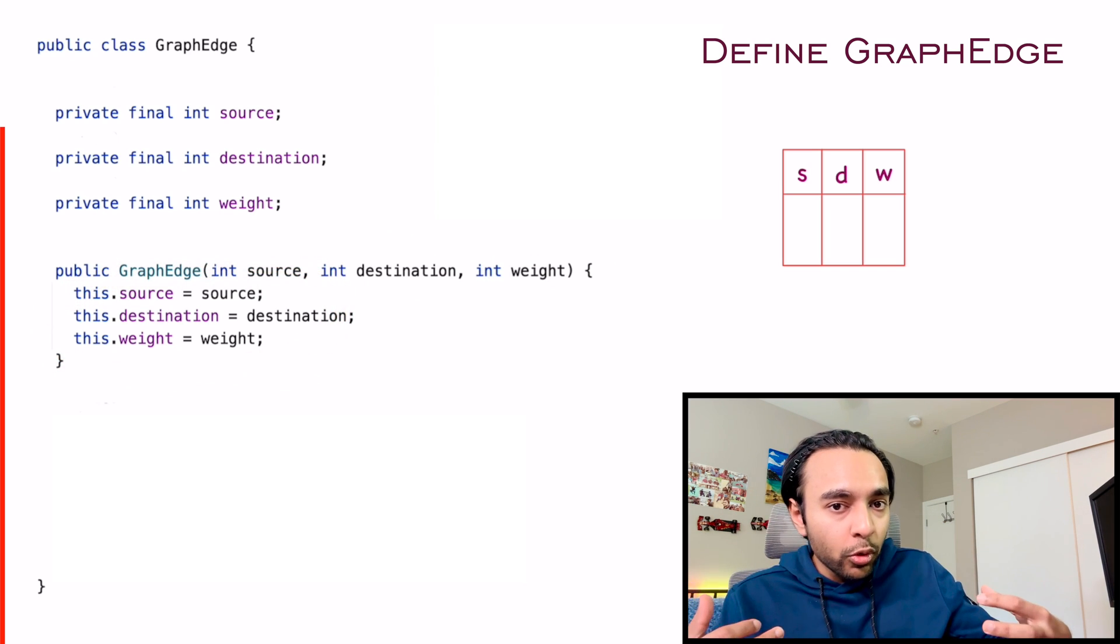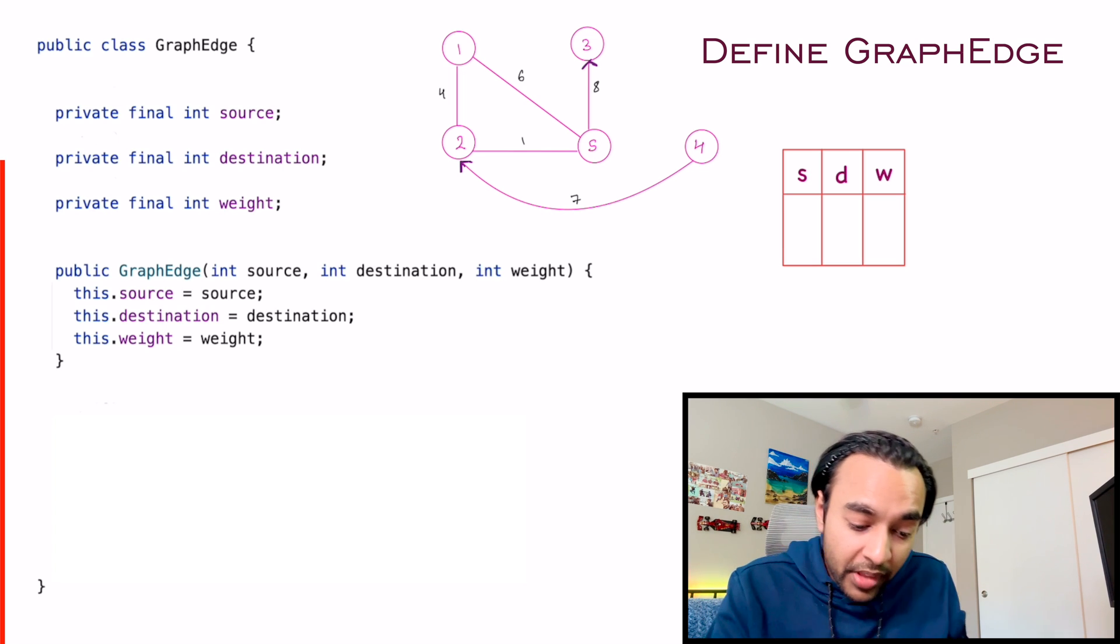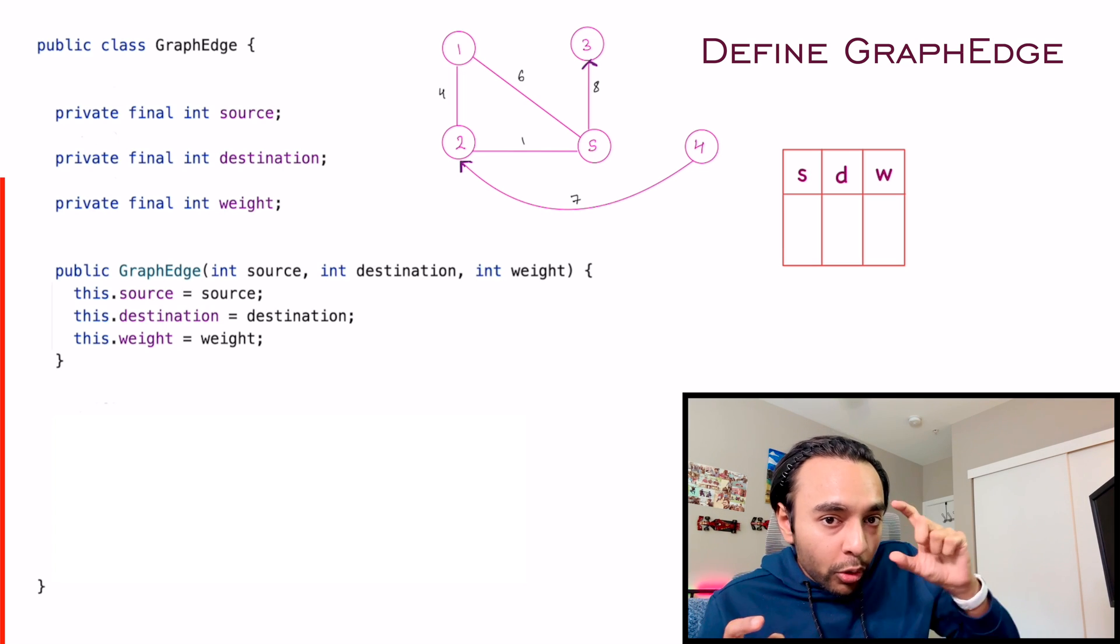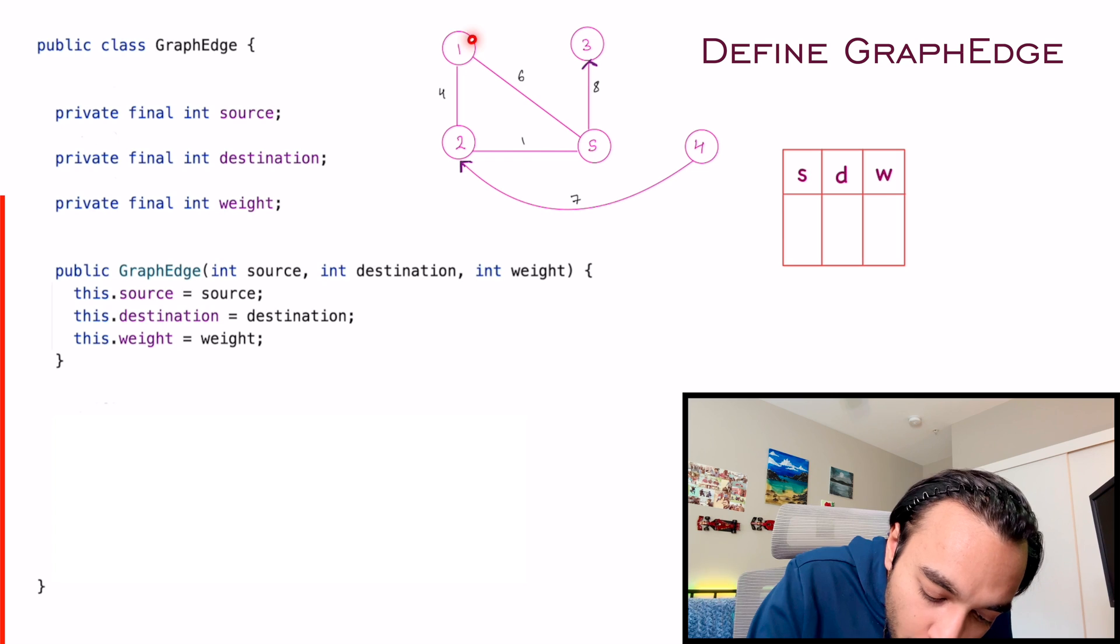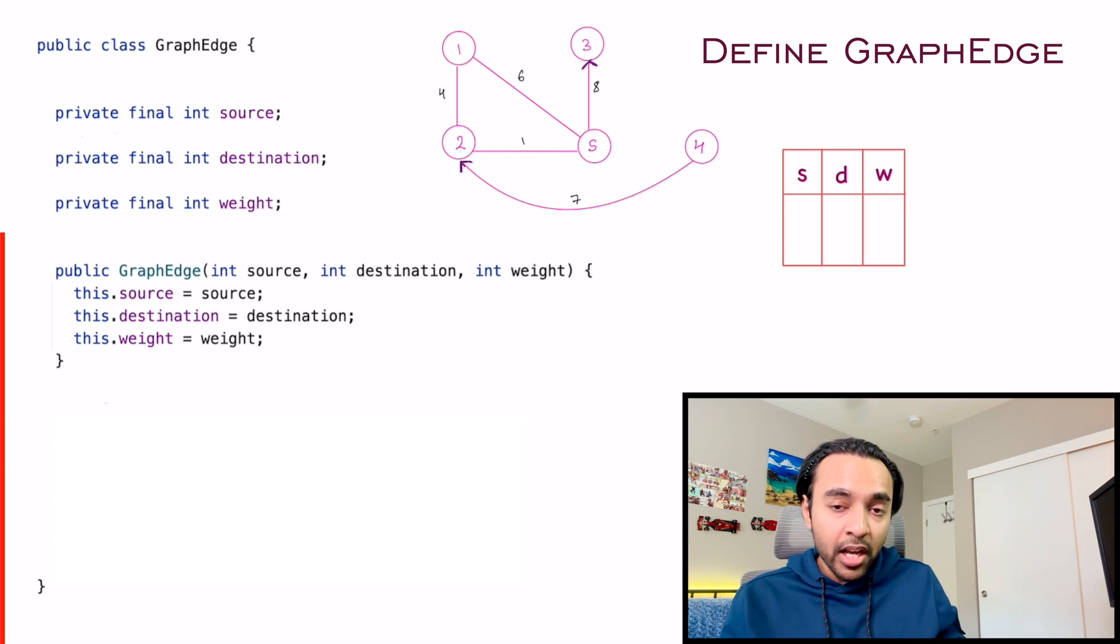So what we are trying to do over here is, let us say I have a graph that looks like this. And now I want to initialize an edge between node one and node two that has the weight of four.